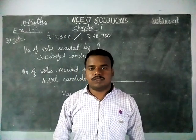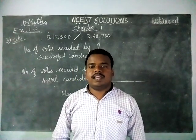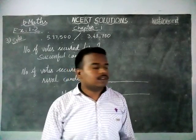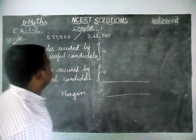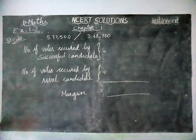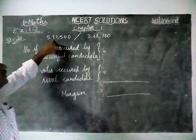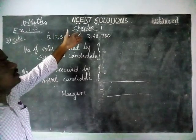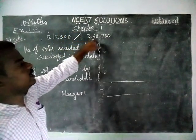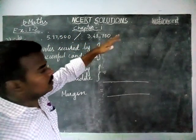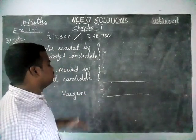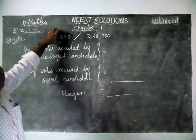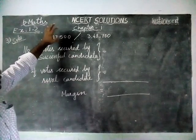Hi students, welcome to NCRT Solutions. Today we are going to see exercise 1.2, third question. Listen carefully. In an election, a successful candidate secured 5,77,500 votes and his nearest rival secured 3,48,700 votes. They ask us to find by what margin the successful candidate won in that election.